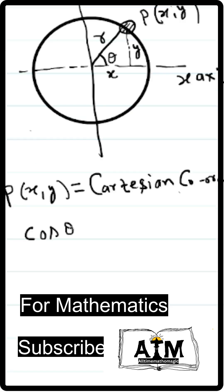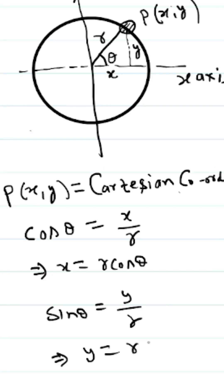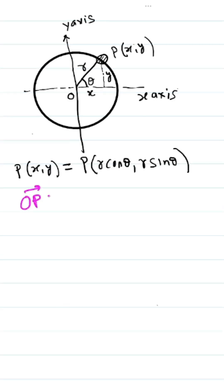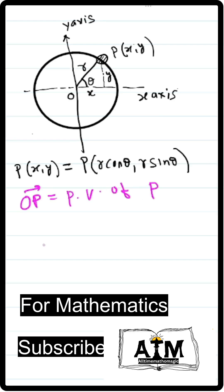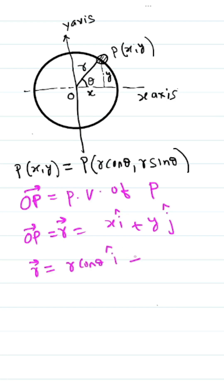From the diagram, cos θ = x/r, which implies x = r cos θ, and similarly y = r sin θ. Therefore, the particle coordinates P(x, y) give x = r cos θ and y = r sin θ. That is, vector OP — the position vector of point P — is vector r = r cos θ î + r sin θ ĵ.